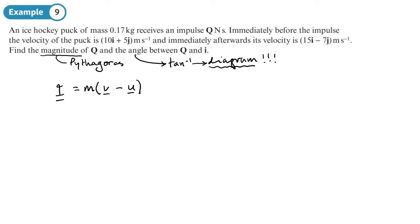So impulse equals mass times velocity afterwards minus velocity before. We're working out the impulse and the mass is 0.17. The velocity after the collision is 15i minus 7j and we're subtracting the impulse before, which is 10i plus 5j. That's going to be 0.17 times, let's work out what's in the bracket, so 15 minus 10 is 5i, negative 7 minus 5 is minus 12j.